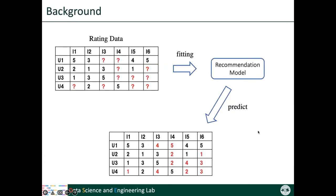The Rating Prediction task is one of the basic tasks in recommender systems. Typically, to build a rating prediction model, we first collect the historical rating data — the historical ratings users gave to items — and then train the model on such collected data. Finally, we use the well-trained model to predict unknown ratings so that we can recommend items with high predicted ratings to users.